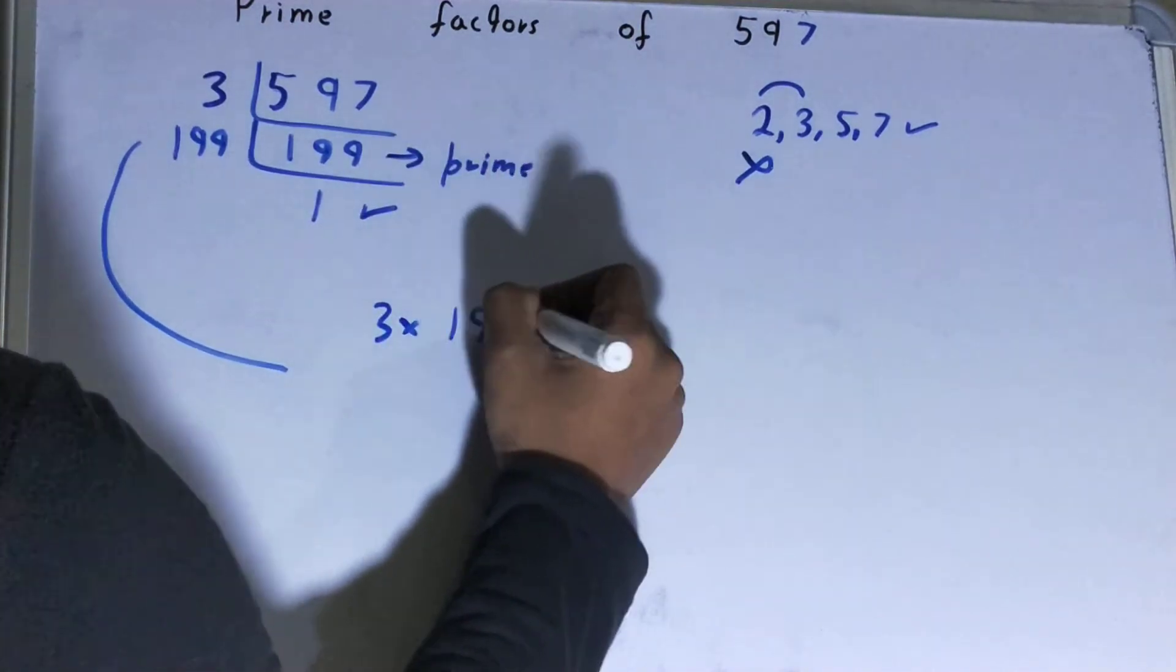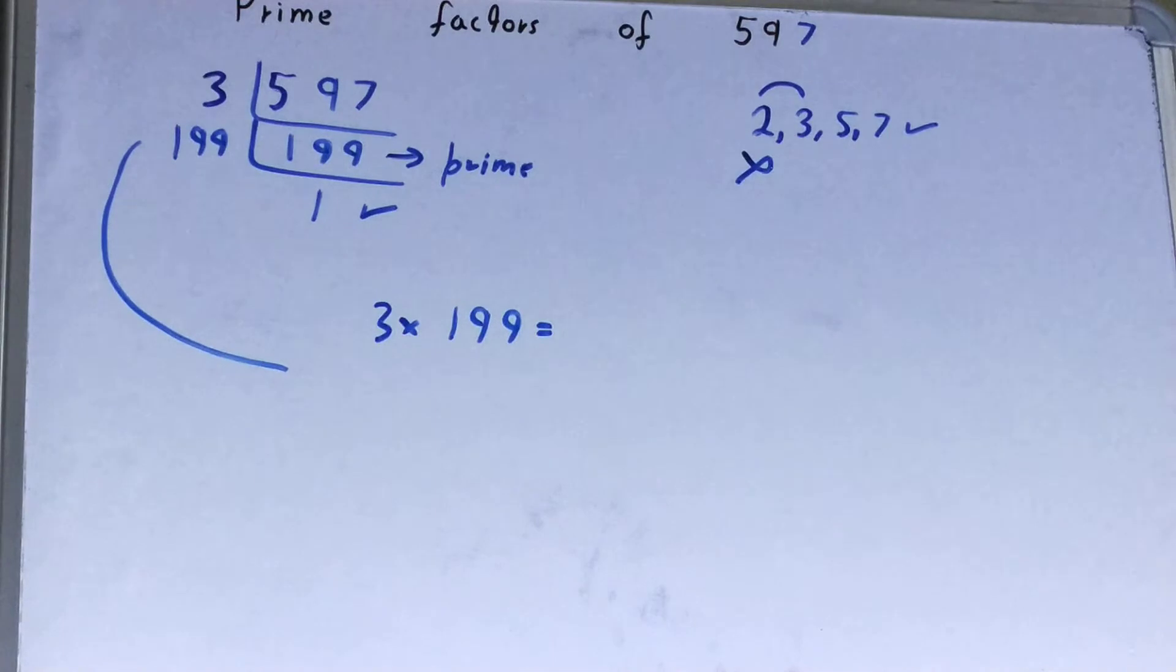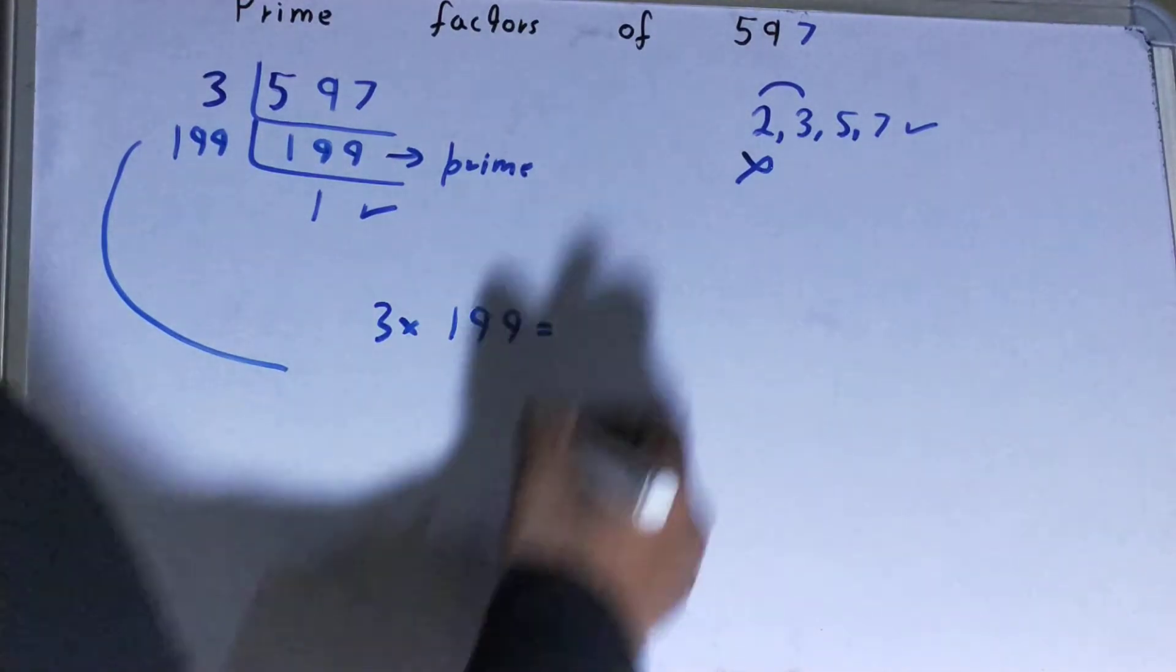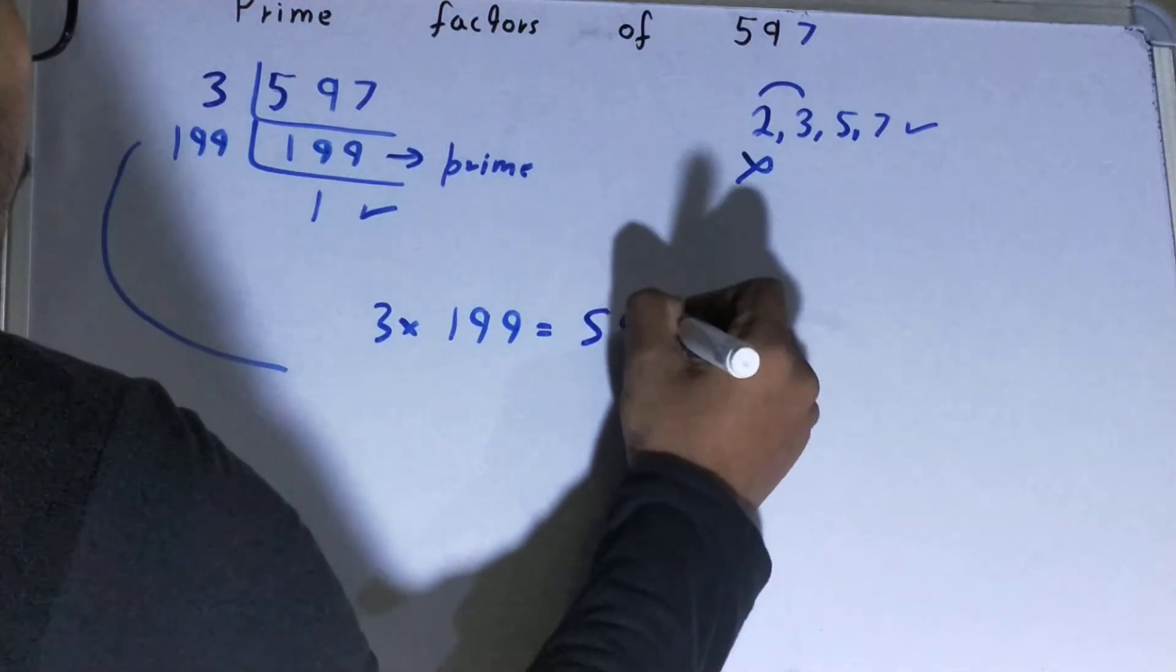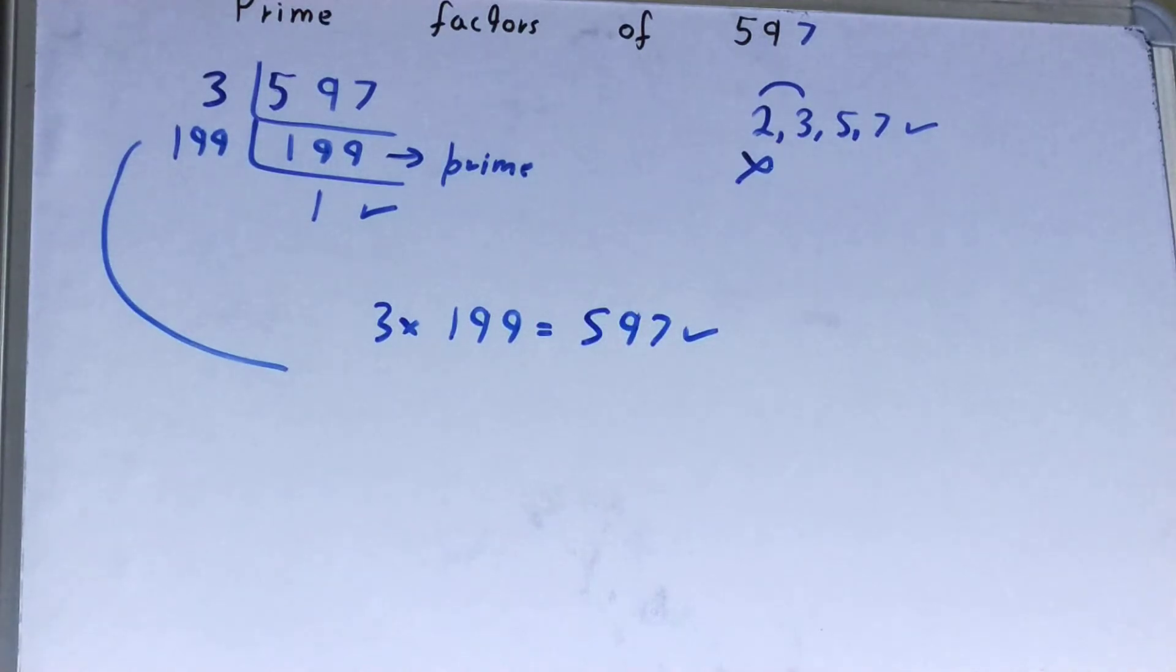Now if you want to check whether it is right or not, you can multiply them. And if on multiplying you get the number back again, that means your calculation is perfect. If not, you need to recheck.